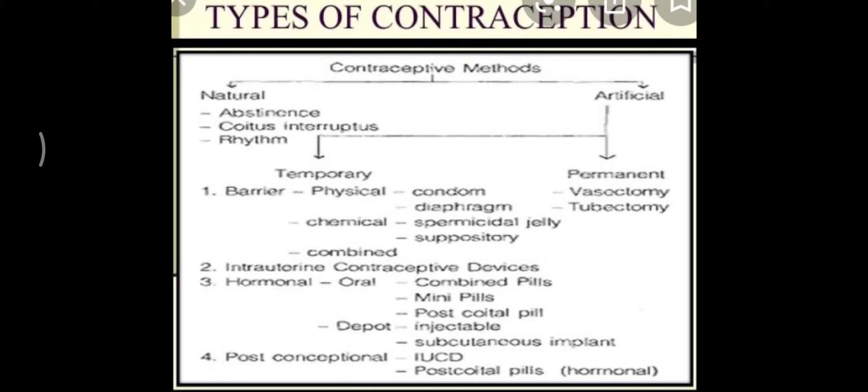The principle of barrier methods is that they do not allow the gametes to meet. When the gametes do not meet, fertilization does not occur — so basically they prevent zygote formation. This includes condoms, diaphragm, cervical caps, and valves. Let us take the first barrier device, that is the condom.